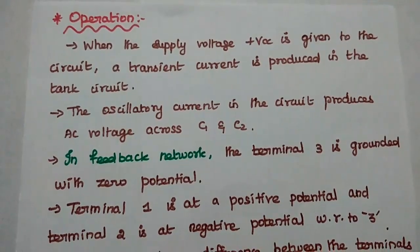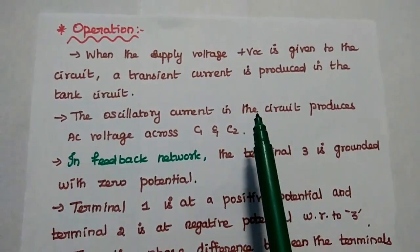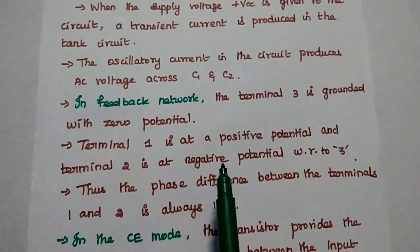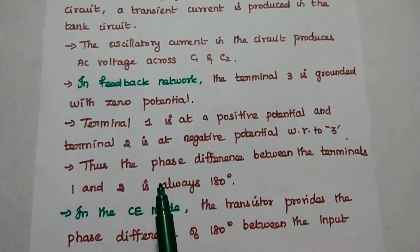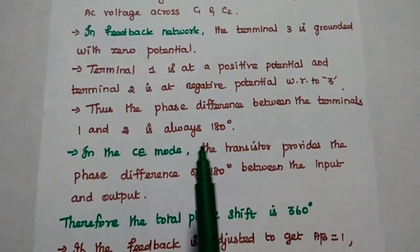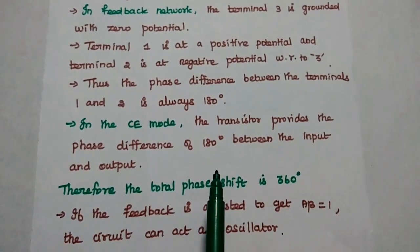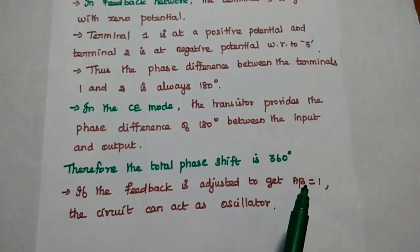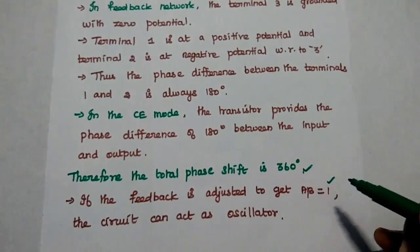When supply voltage VCC is applied to the circuit, an oscillatory transient current is produced in the tank circuit. This current produces an AC voltage across C1 and C2. In the feedback network, terminal 3 is grounded at zero potential; terminal 1 is at positive potential and terminal 2 is at negative potential with respect to terminal 3, and vice versa. The total phase difference between terminals 1 and 2 is always 180 degrees. In CE mode, the transistor provides a phase difference of 180 degrees between input and output, giving a total phase shift of 360 degrees. If the feedback is adjusted to get A·β = 1, the circuit acts as an oscillator, satisfying the Barkhausen criterion.